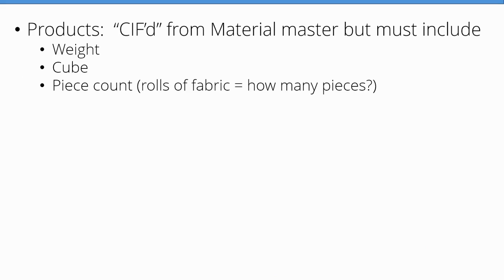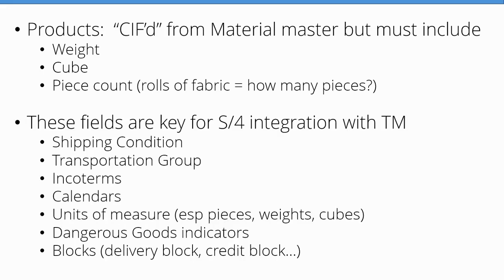For products, you need to have a discussion with your production and procurement teams, because each product needs a defined weight, cube, and some way of determining a piece count. A real-world example: a client dealing in rolls of fabric faces an unresolved problem because a roll can be fairly small or fairly large, making it difficult to determine weight and piece count since it varies. TM really requires all of these aspects to function properly. The fields below are all part of S4 but are key for the integration with TM, so careful discussion with procurement or order-to-cash teams is needed. Shipping condition, for example, is a key driver.